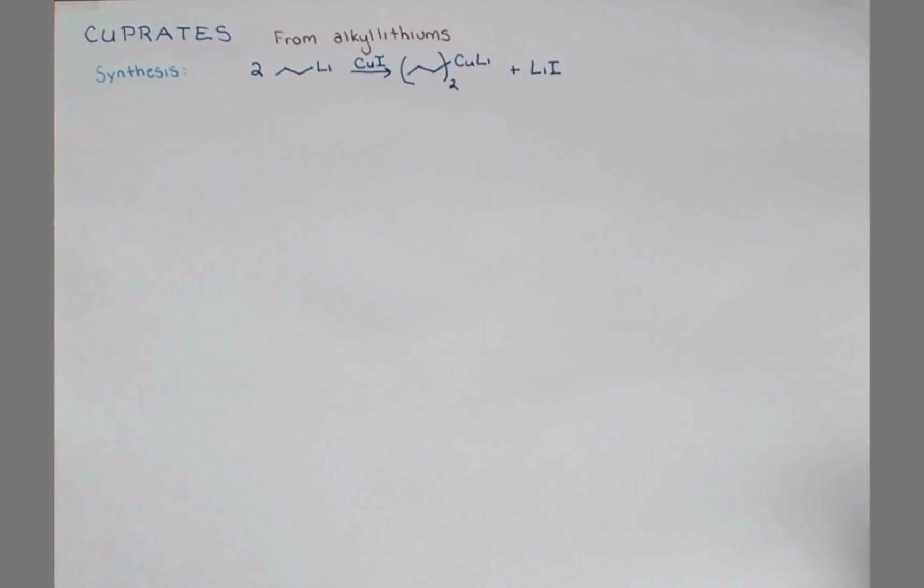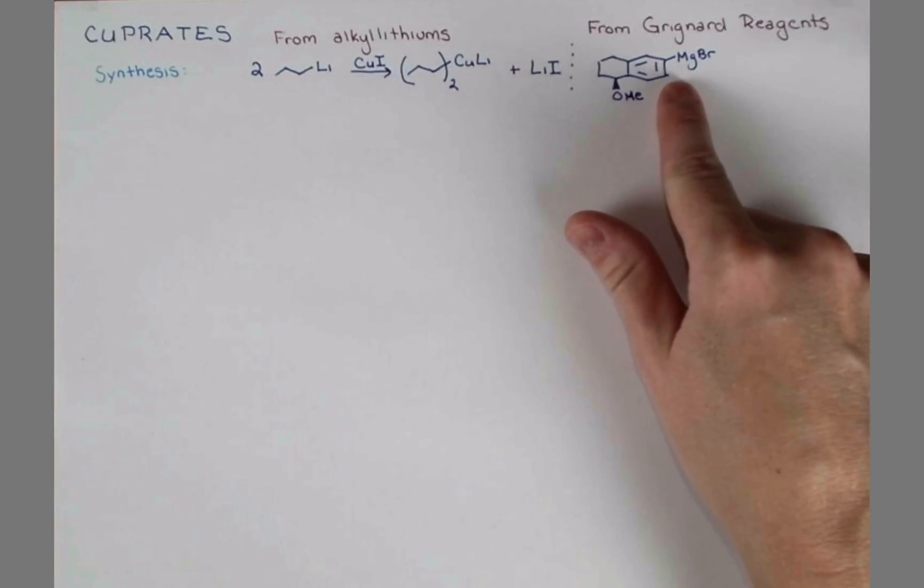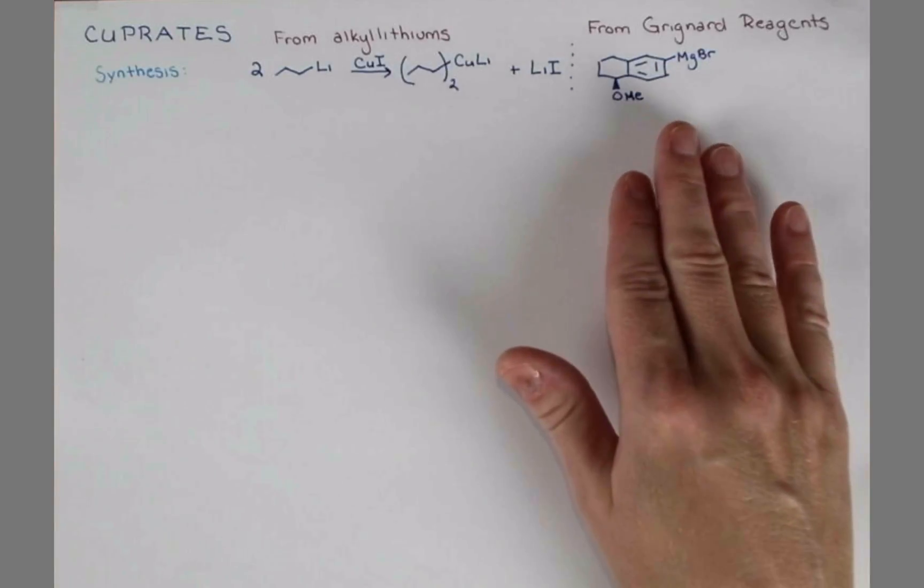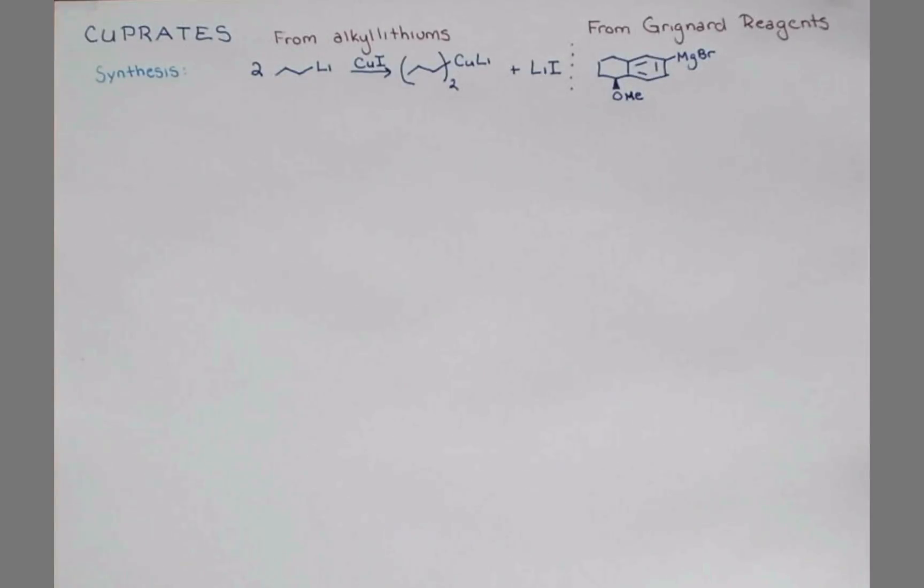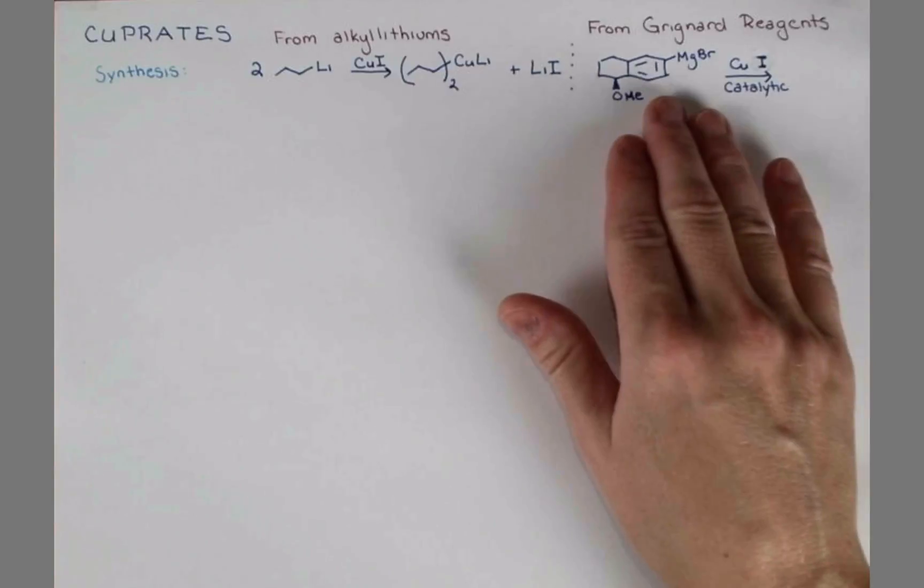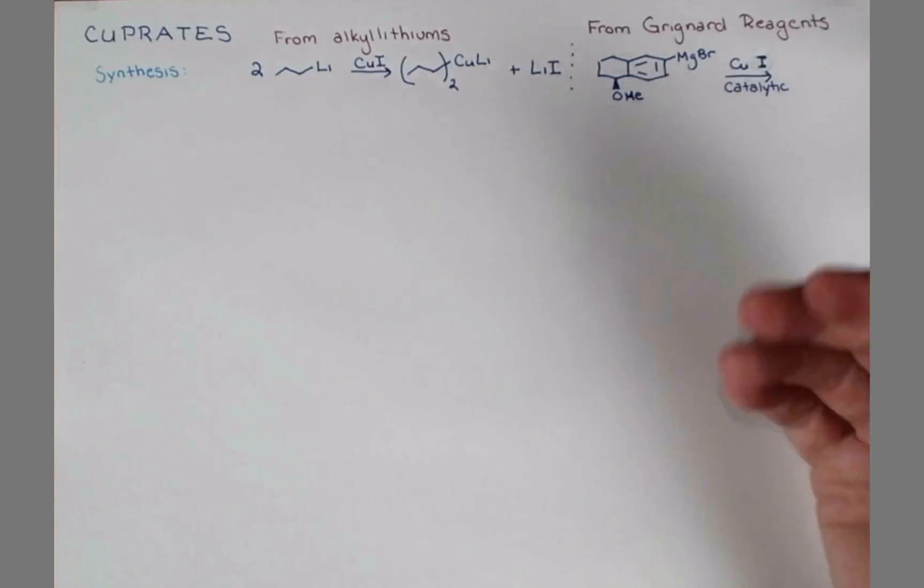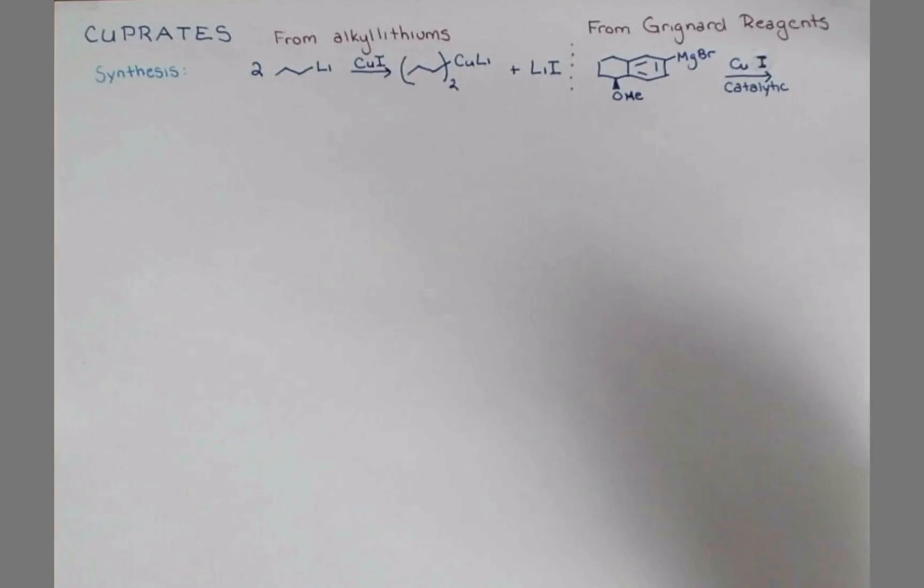So if your material is a little bit more precious, you might want to generate your cuprate from a Grignard. So to synthesize this, you probably made the corresponding bromide, treated it with magnesium metal in dry ether, and got this reagent. Now say you want it to have the reactivity of a cuprate, and not a Grignard reagent. Treating this Grignard reagent with catalytic amounts of copper iodide will create a cuprate in situ, in your reaction flask.